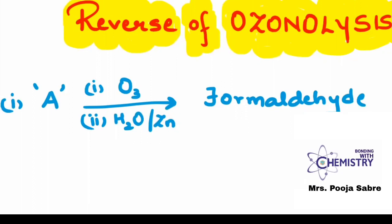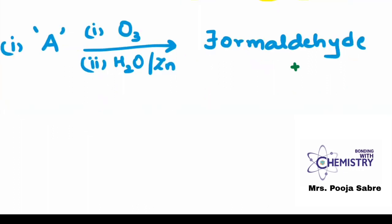Now the first question: A on ozonolysis gives formaldehyde. In this question, we know the product that is formaldehyde, but we don't know what is the reactant. So the trick for reverse of ozonolysis is, whatever question has been given, just simply write down the structure.